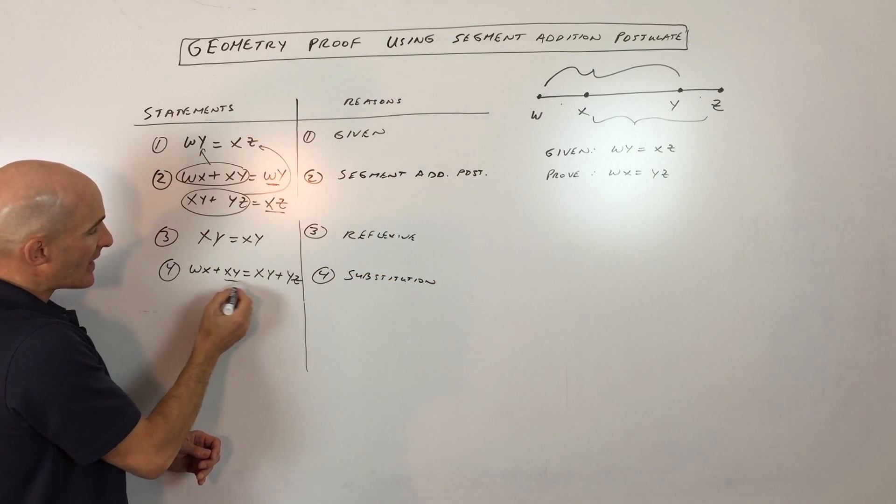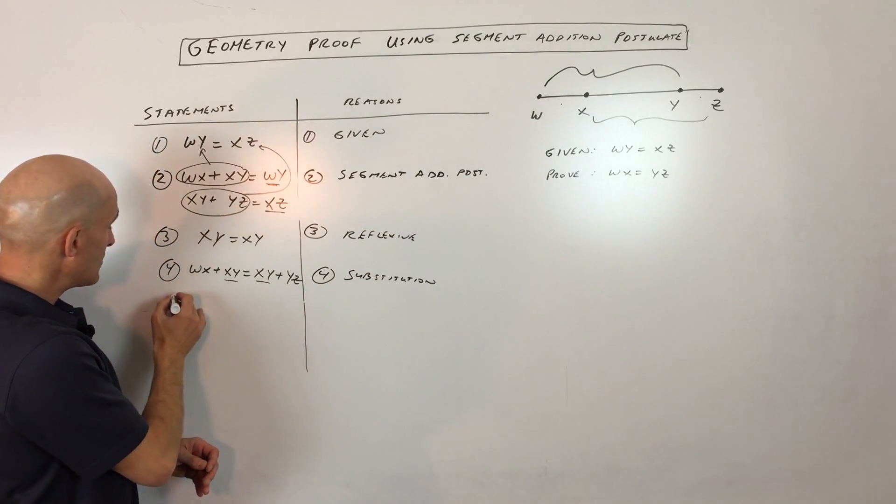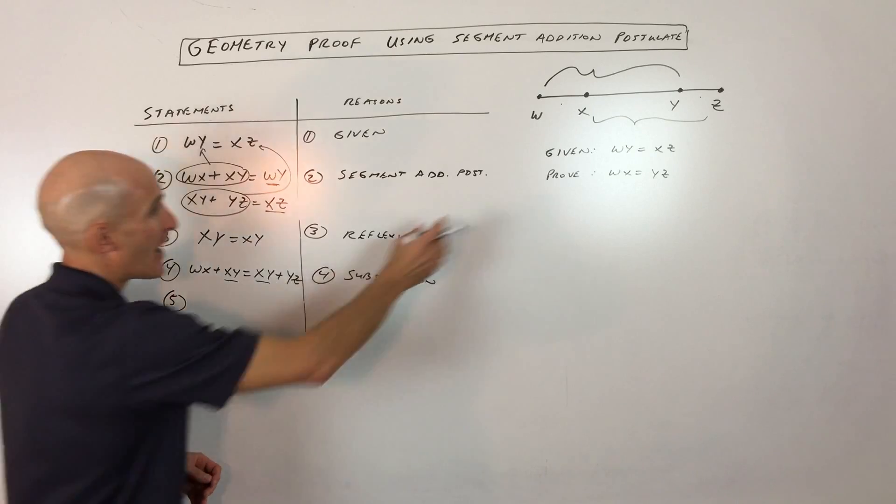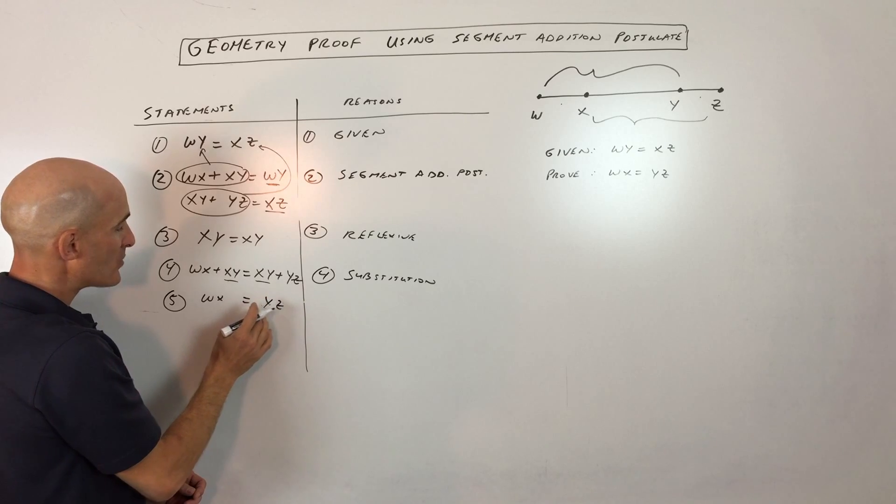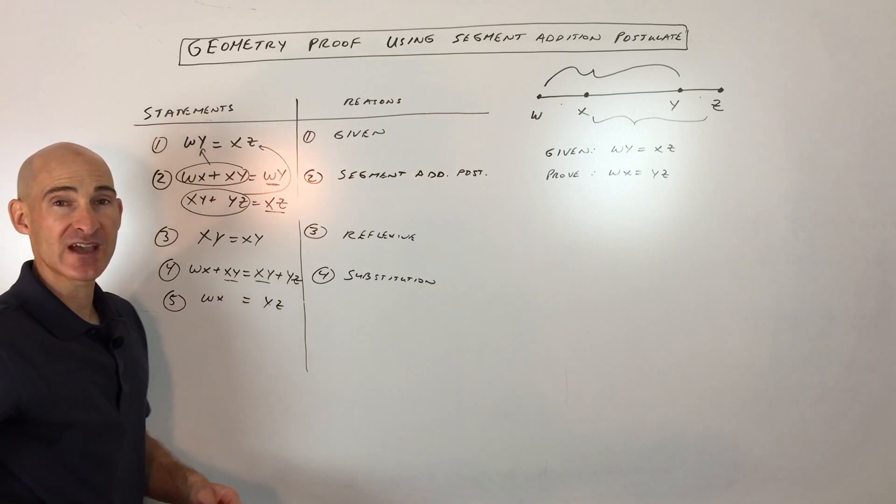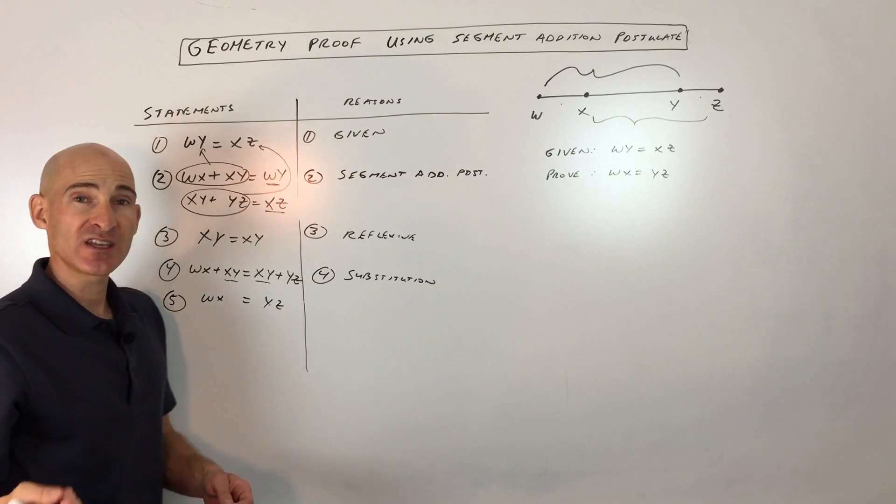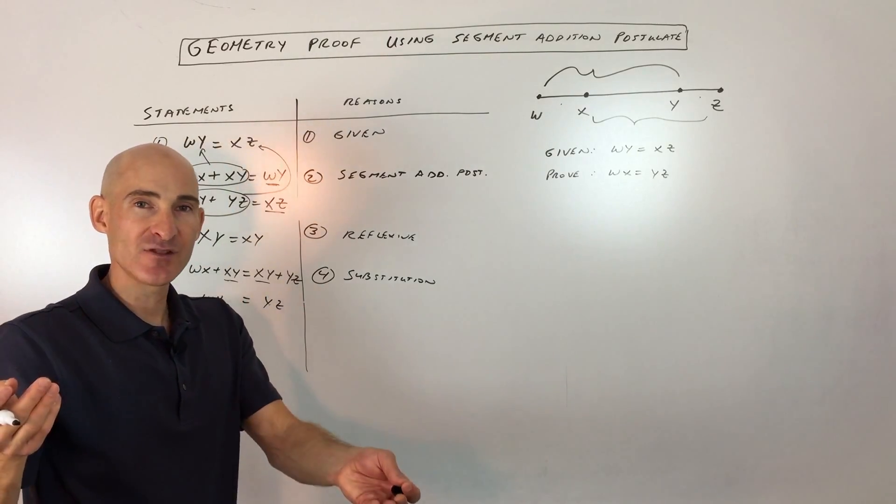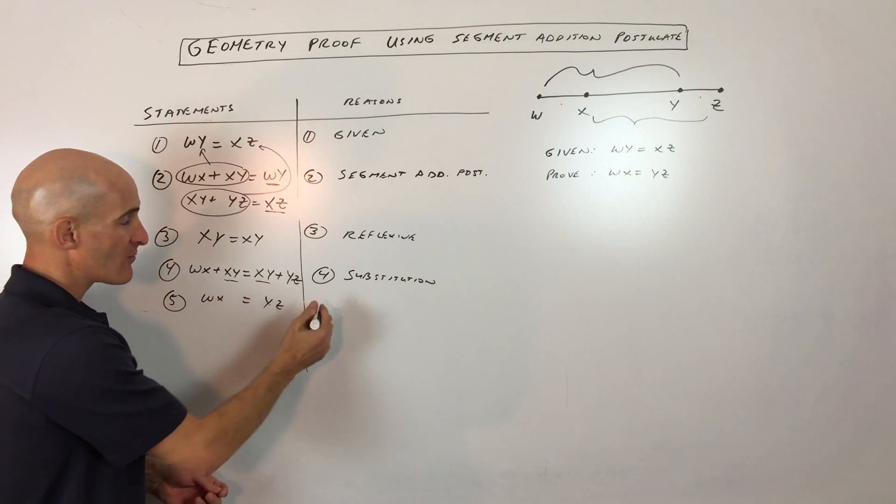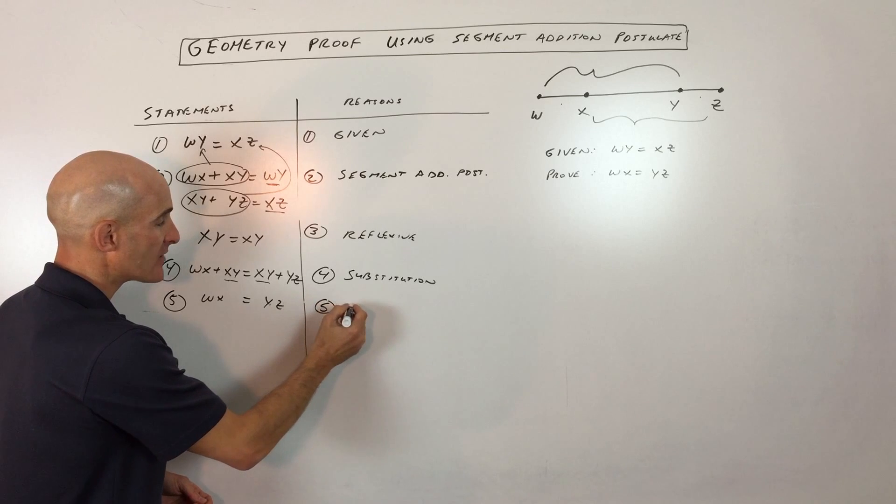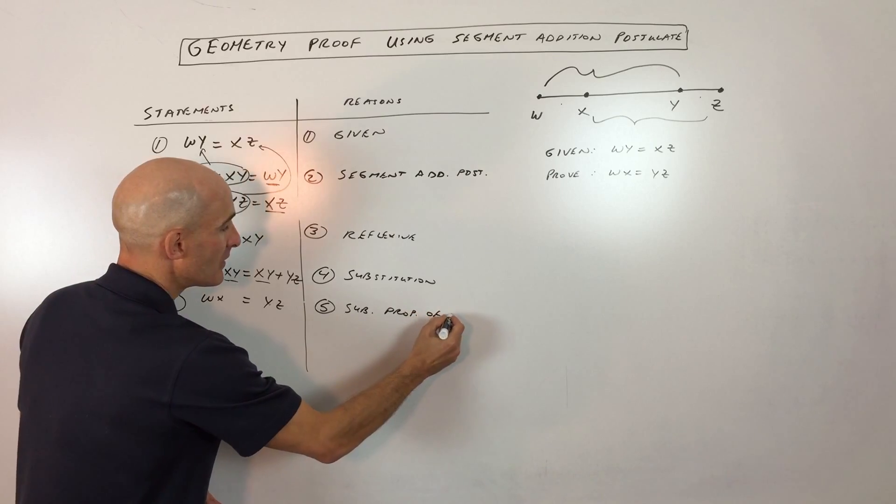Now notice that we have an XY on both sides of the equal sign, right? So let's go ahead and jump to step number five, which is what we're trying to prove. And that's that WX equals YZ. Now, how was I able to eliminate the XY on both sides of this equation? Well, that's called the subtraction property of equality. Just like in algebra, when you subtracted nine from the left side and nine from the right side, it keeps the equation balanced. It's the same thing here. We're subtracting XY from both sides of the equation, so it keeps it balanced. And that's called the subtraction property of equality.